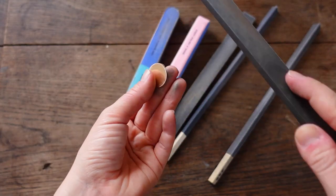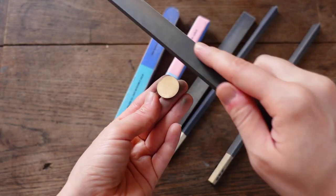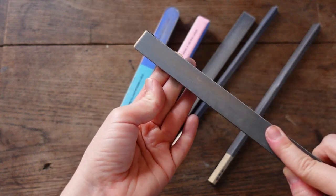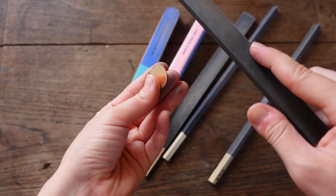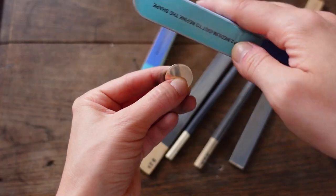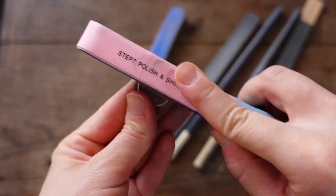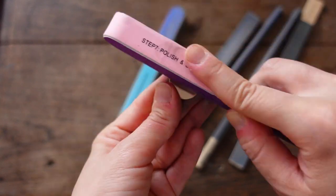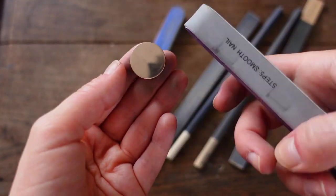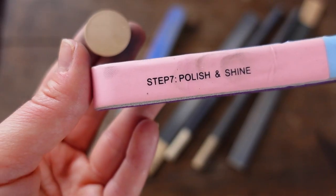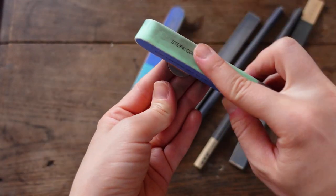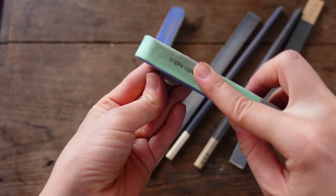I've sanded the edges using a high grit sanding stick, for example 1200. We don't want to remove too much of the gold layer nor put unnecessary scratches on the surface. It might take a bit longer to soften the edges with this stick as it's not abrasive. Then I've cleaned the surface with the gentle nail buffing and polishing stick.